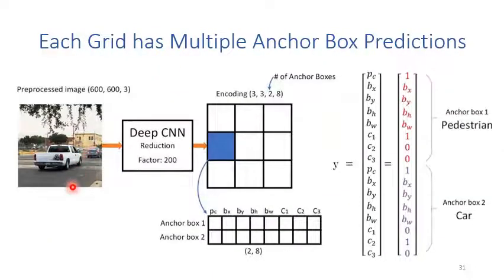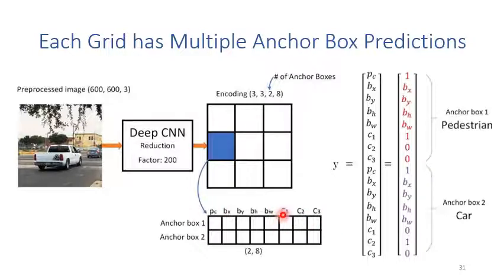In our car detection example again, each grid can have multiple anchor boxes. Suppose we have two anchor boxes: anchor box 1 has the confidence score, bounding box coordinates, height and width, and class probability. In YOLO v1, we could have multiple boxes but only one class probability — meaning we could only predict one class. But for YOLO v2, each bounding box has its own class prediction, so now we can predict multiple objects at the same grid cell. Anchor box 1 can be used to predict pedestrians, while anchor box 2 can predict cars.